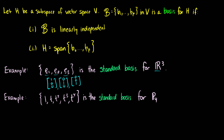If we write this in a coordinate system, we have a vector one unit to the right, a vector one unit up, and a vector one unit in and out of the screen.